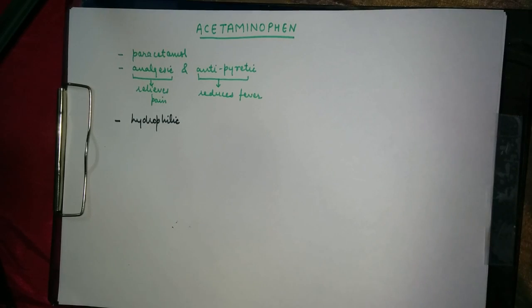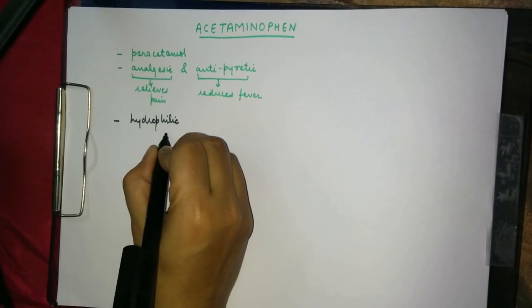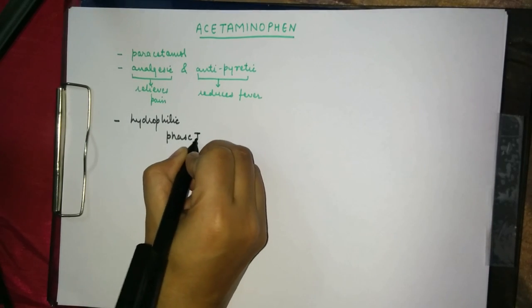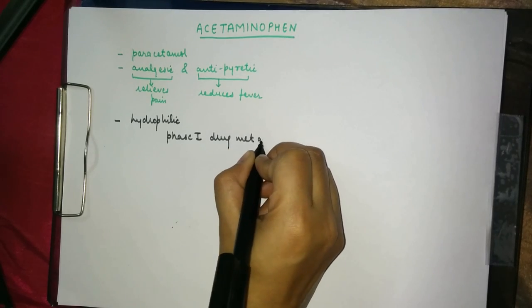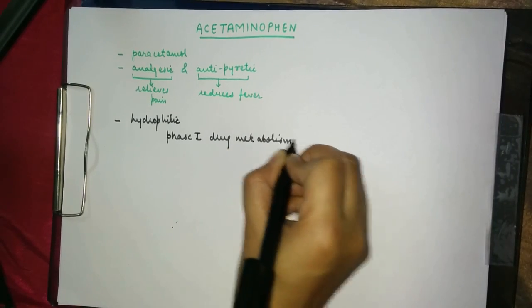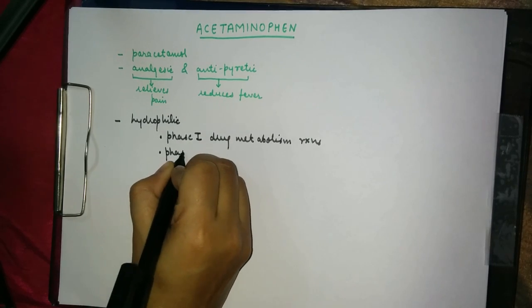To do so, there are two phases of drug metabolism which our body performs: phase 1 drug metabolism reactions and phase 2 drug metabolism reactions.